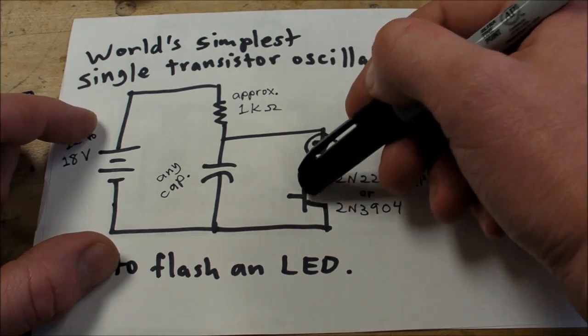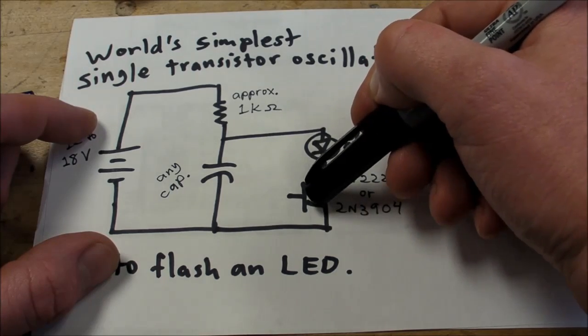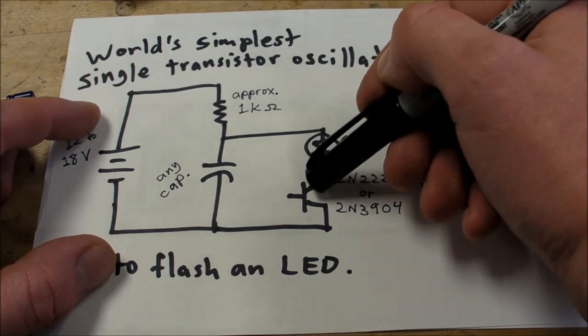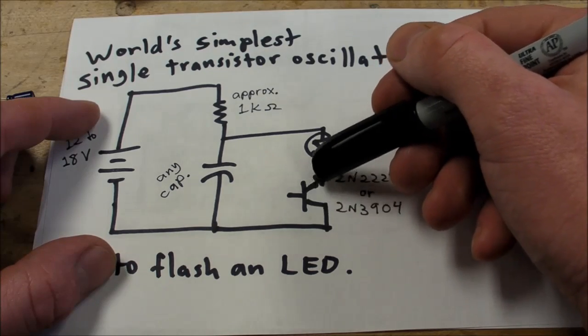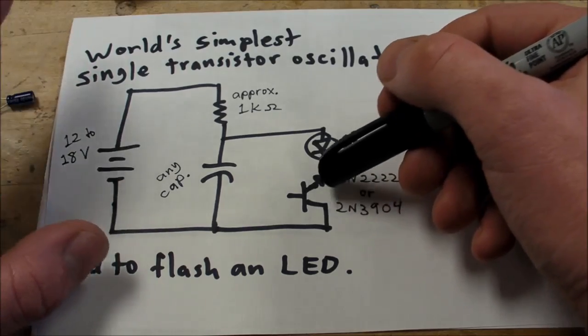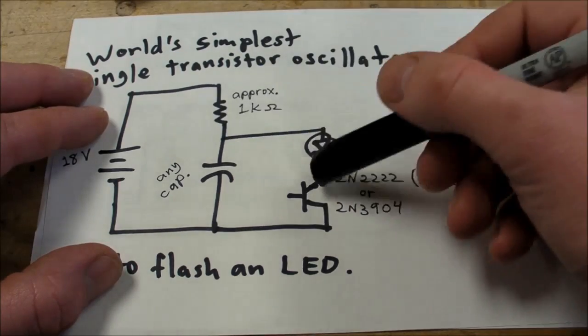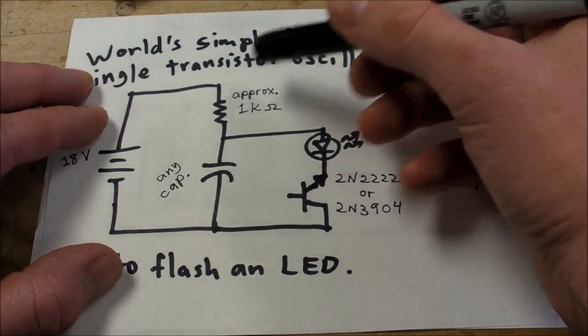But it takes a certain voltage to become conducting, and then when it does conduct, it really conducts. And that's the negative resistance part, and that's what allows this very simple oscillator to work. So once it goes into negative resistance, then...